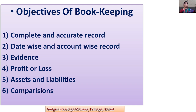The second objective is date-wise and account-wise record. Business transactions are to be recorded date-wise and account-wise in bookkeeping and accountancy. The third objective is evidence — the record in bookkeeping can be produced as evidence if needed. The next objective is profit or loss: to know the profit or loss of the business during the financial year, bookkeeping is necessary.